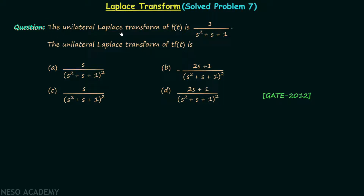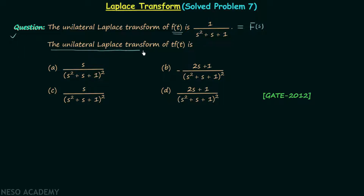The unilateral Laplace transform of a time domain signal f(t) is equal to 1 over s² plus s plus 1, represented by F(s). In this question, we are required to calculate the unilateral Laplace transform of the time domain signal t·f(t).